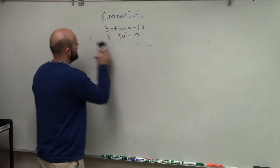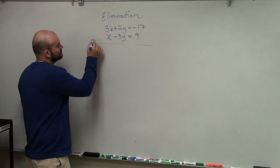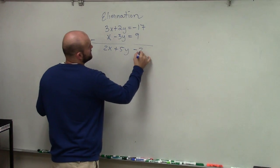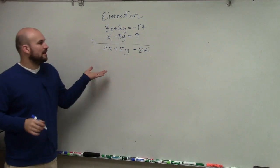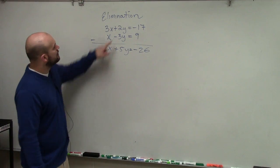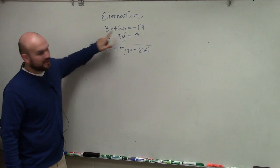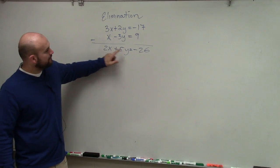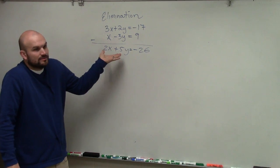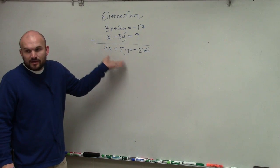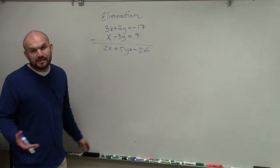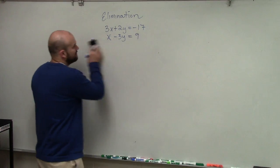If we go ahead and subtract the two equations, I get 2x plus 5y equals negative 26. Why is it plus 5y? Because 2y minus a negative — a double negative makes it add. But again, do I have a 0 for my coefficients? No. What you want to do is get 0 times a variable, because 0 times a variable is going to eliminate your variable.